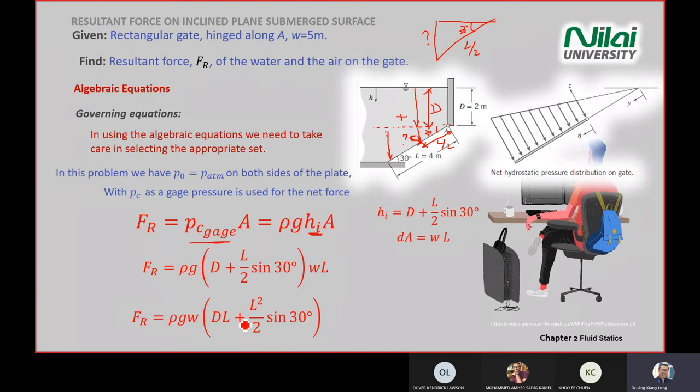And then you rearrange the equation. So you have FR equals rho g W D L plus L squared divided by 2 sine 30 degree. So if you are using an algebraic approach, then you are focusing on gauge pressure. Gauge pressure always focuses on centroid location. Just put the mark beside your notes there. So if you are using pressure gauge or gauge pressure, it will always act on the centroid, centroid of the object or the surface.